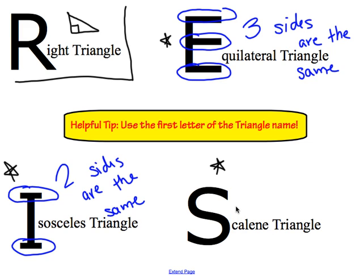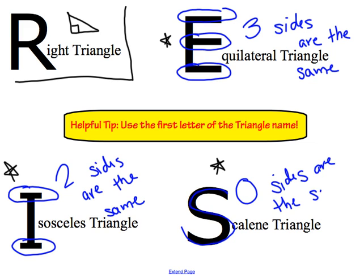Finally, looking at our S for the scalene triangle, there are no lines in that S — it's curved. Since there are no lines, zero sides are the same in a scalene triangle. This is just a helpful hint you can use to distinguish between equilateral, isosceles, and scalene: think about that first letter and the number of lines in those letters.